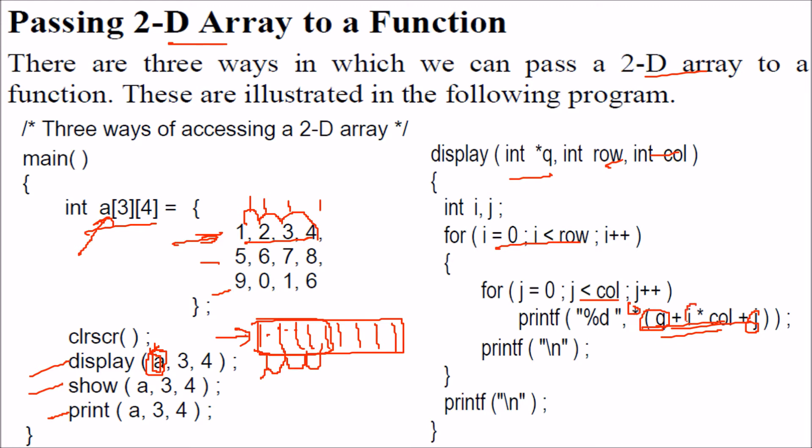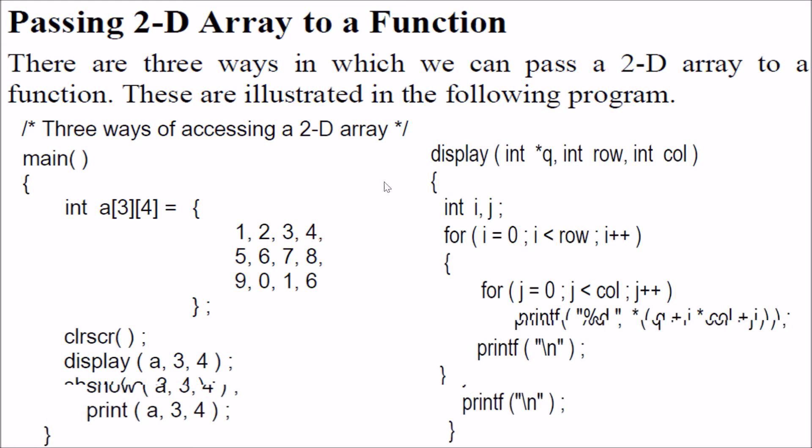Next time, this i will be 1. Now this is the starting address, but because i is 1, i into column will be this address. Now you have jumped to this address (1, 2, 3, 4), and it will show the value at this address. Next time, it goes on like this.